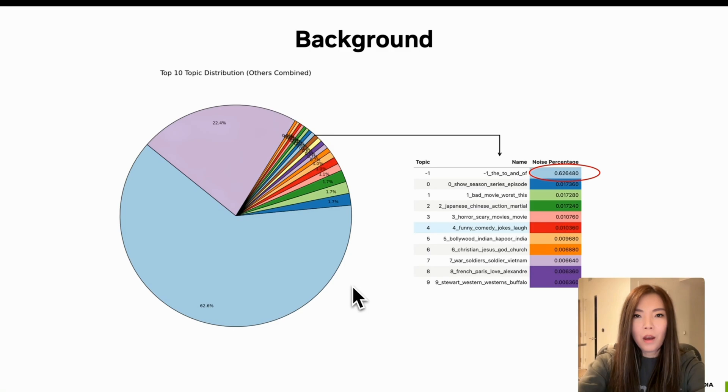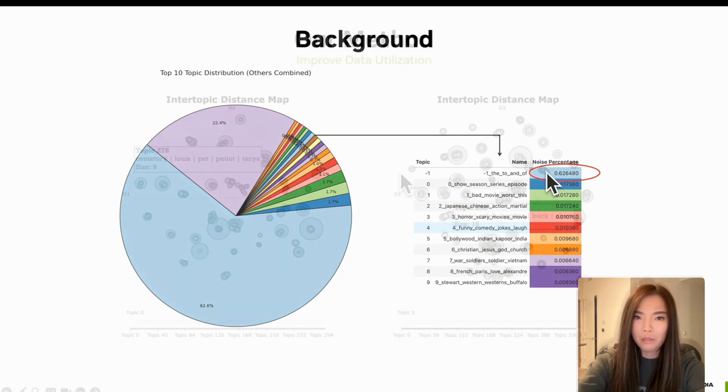On this slide, we observe the topic distribution generated by a BERTopic model. Notably, over 50% of the data has been assigned to a noise cluster labeled as negative one. This noise cluster typically captures documents that do not clearly align with any identified topic, which leads to a substantial portion of valuable source data being underutilized.